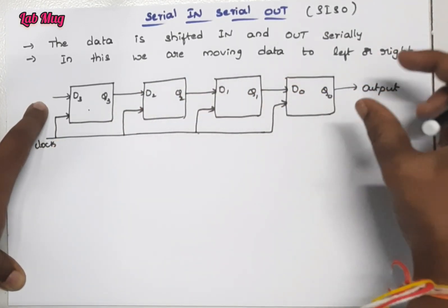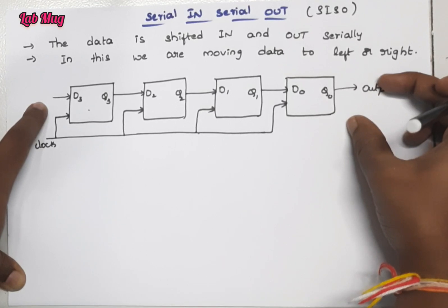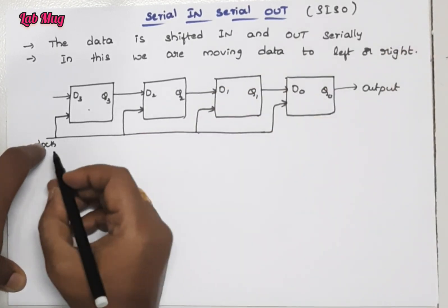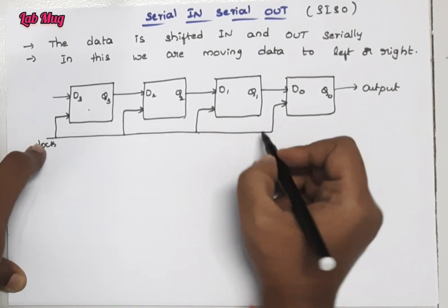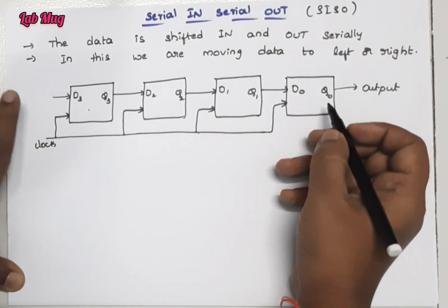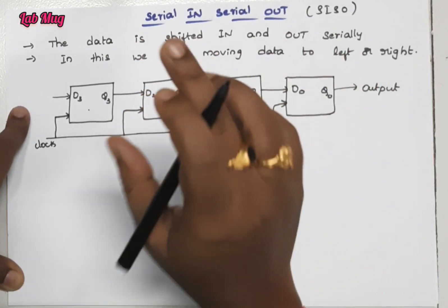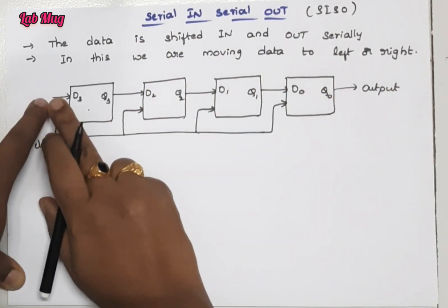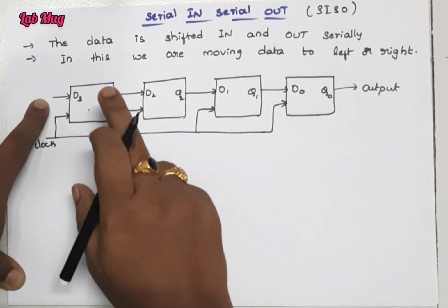For flip-flops, clock pulse is compulsory. Each and every flip-flop needs a clock pulse individually. What is the meaning of serial in and serial out? Whatever input is given serially, that processing output we get serially.